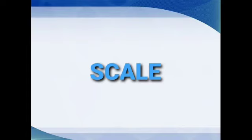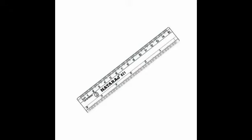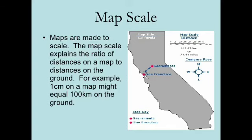Our next topic is scale. We all know about scale — it is used for measurement, but in a map its meaning is different. In a map, we use it for measuring the distance between two places. Scale is a sketch on the map by which we can measure the distance between two places. We cannot draw a map showing the actual size of a place or the actual size of the Earth, hence we use scale in maps.